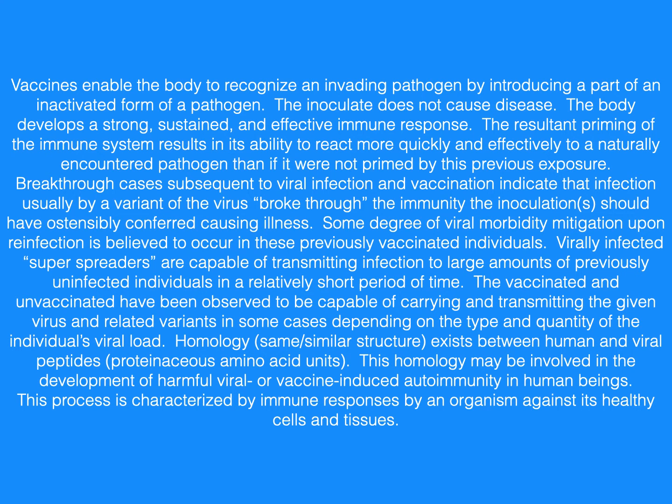A vaccine is used to develop an active immune response to recognize an invading pathogen by introducing a part of an inactivated form of a pathogen. The inoculate does not cause disease. The body develops a strong, sustained, and effective immune response. The resultant priming of the immune system results in its ability to react more quickly and effectively to a naturally encountered pathogen than if it were not primed by this previous exposure.